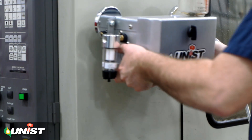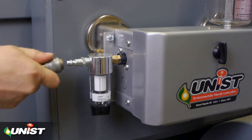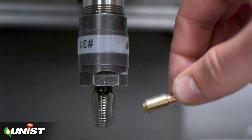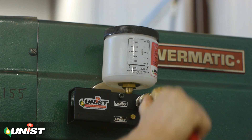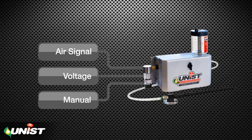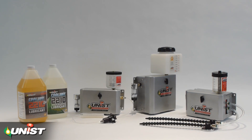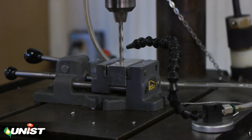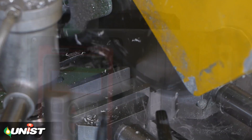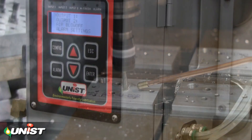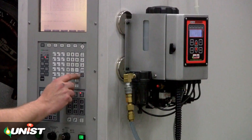The line of Unist MQL application systems makes it easy to get up and running with minimum quantity lubrication. Unist systems were designed to easily integrate with your machine and can be triggered using air signals, electronic signals, or simple manual valves. Unist offers a complete line of systems from basic units for open mills, drill presses, and saws, to the full-blown Unist Revolution system, which integrates with CNC machines using M codes.